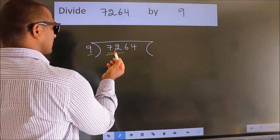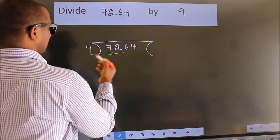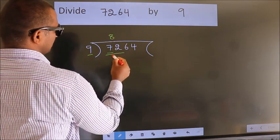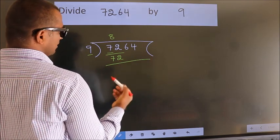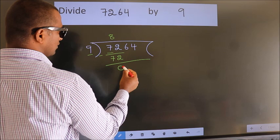When do we get 72 in the 9 table? 9 times 8 equals 72. Now we should subtract. We get 0.